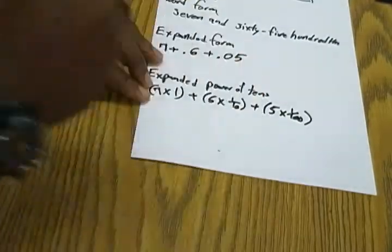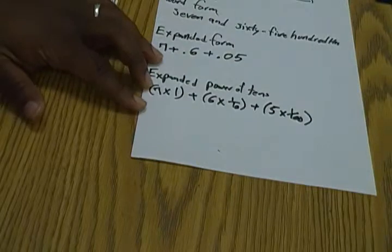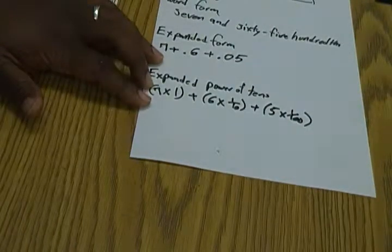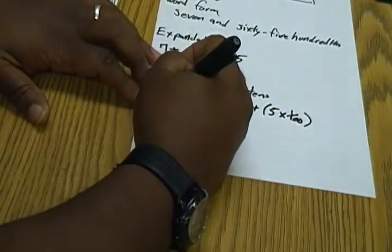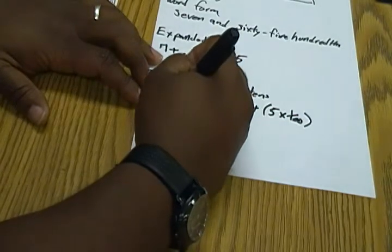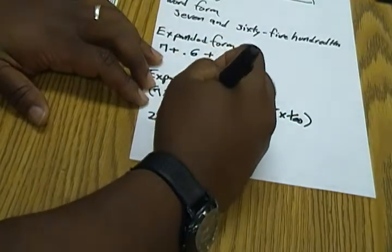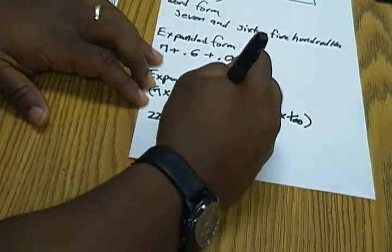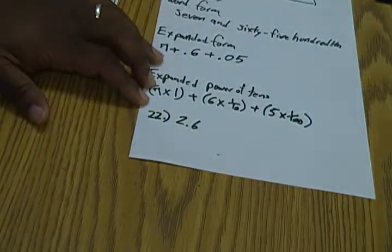So, I'm actually going to use example 22 from the homework. For number 22, they have this: they have 2.6, which is 2 and 6 tenths.